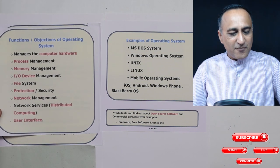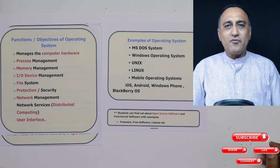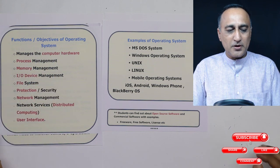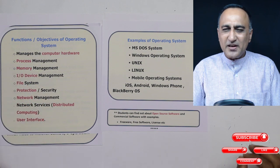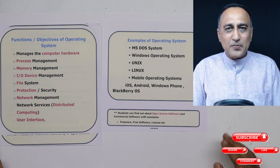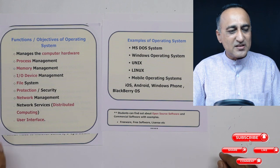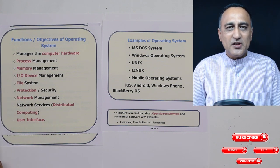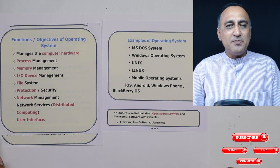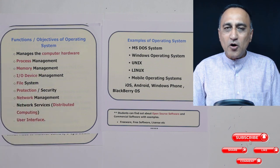Let's understand the functions and objectives of an operating system. The most important definition is: an operating system is a resource manager — a manager of all the hardware on the computer. Now, process management: say there are 30 programs running and 30 people using the computer. Each program can be considered a process running on the computer. It is the job of the CPU to give equal time to all, or there may be a rule that some people get extra time because they are doing important jobs. All those tasks are handled by the process management module of the operating system.